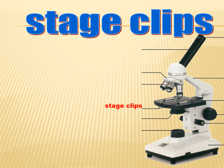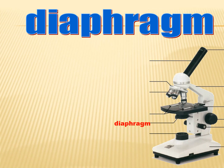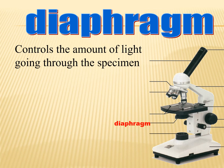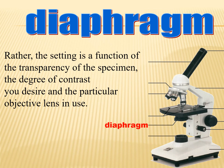Stage clips hold the slides in place. If your microscope has a mechanical stage, you can move the slide around by turning two knobs — one moves it left and right, and the other moves it up and down. The iris diaphragm controls the amount of light going through the specimen. Many microscopes have a rotating disc under the stage with different size holes, used to vary the intensity and size of the cone of light projected up to the slides.